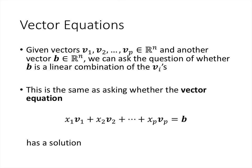In general, given some vectors in Rn and some other vector b in Rn, we can ask whether b is or is not a linear combination of the v's. That's a yes-or-no question, and it's the same as asking whether the vector equation has a solution — that is, whether there exist p scalars such that when we multiply each scalar by its corresponding vector and add the results, we get b.